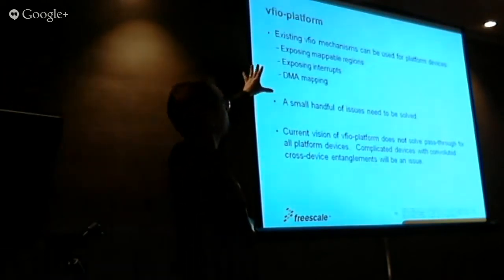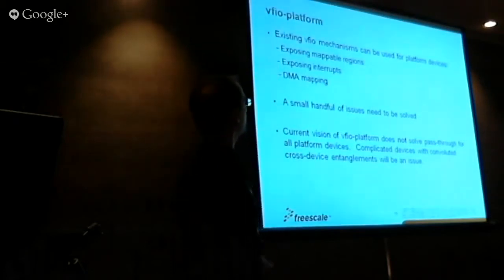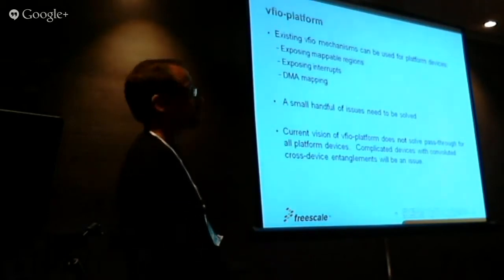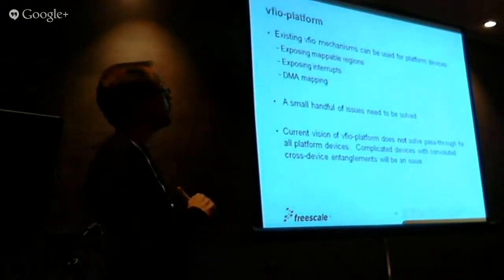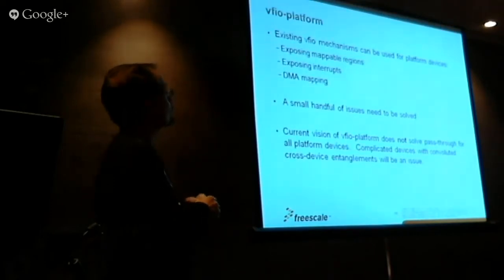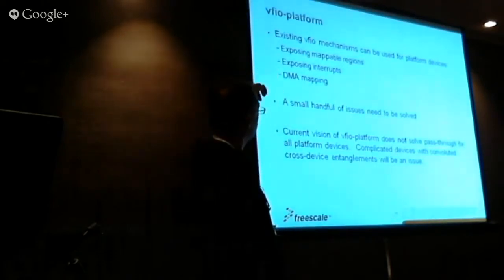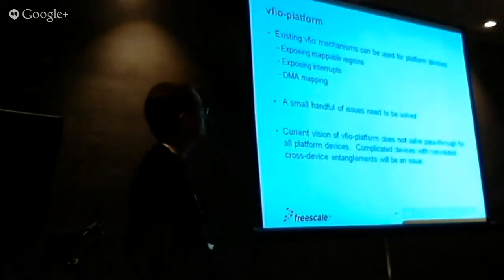The existing mechanisms in VFIO, which are exposing mappable regions, registers of devices, interrupts, and providing DMA mappings, those are the three key things we're providing to user space. The existing mechanisms work and we don't have to re-architect anything or change fundamentals. They work as is for platform devices. But there are a small handful of issues that do need to be addressed, and that's what I want to focus on in the rest of the talk.